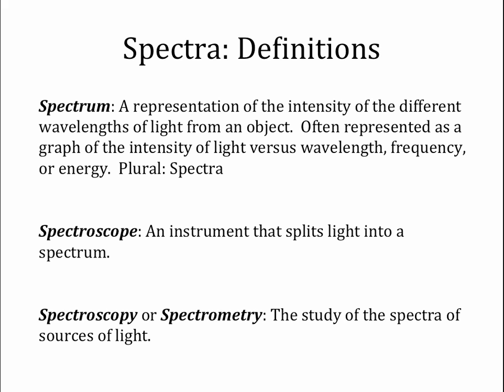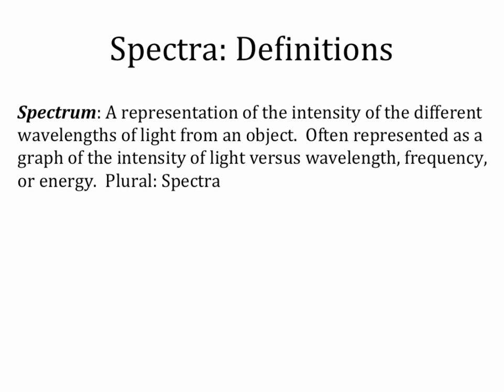First we need some definitions. A spectrum is some representation of the intensity of different wavelengths of light from an object. For example this can be a picture of a rainbow where we see brighter colors where there's more light coming, fainter where there's less light coming. It can be a graph. Typically we use a graph and we plot on the x-axis wavelength or frequency or energy of the light, and on the y-axis we will plot intensity of the light.